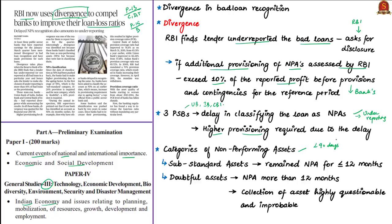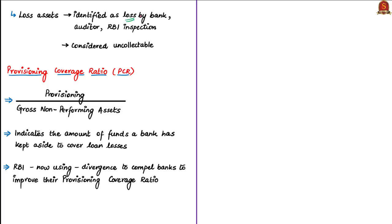For non-performing assets, banks must set aside a certain amount of money to cover losses — this is called provisioning. An asset becomes a non-performing asset when it ceases to generate income for the bank, specifically when an amount under a credit facility has not been paid within 90 days past the due date. There are three categories of non-performing assets: substandard asset, doubtful asset, and loss asset. When a loan remains an NPA for a period less than or equal to 12 months, it is called a substandard asset. When the asset remains an NPA for more than 12 months and collection of principal or interest becomes highly questionable, it is called a doubtful asset. When a loan is identified as a loss by the bank, auditors or RBI and considered uncollectable, it becomes a loss asset.